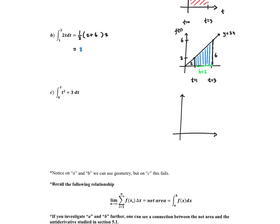I could graph T squared plus 3, which passes through the point (0, 3) and the point (3, 12). The area trapped between the bounds T equals 0 and T equals 3, between the function F(T) = T squared plus 3 and the T-axis, cannot be calculated with 100% accuracy using just geometric methods. We'd have to use some kind of rectangular approximation or trapezoid method.